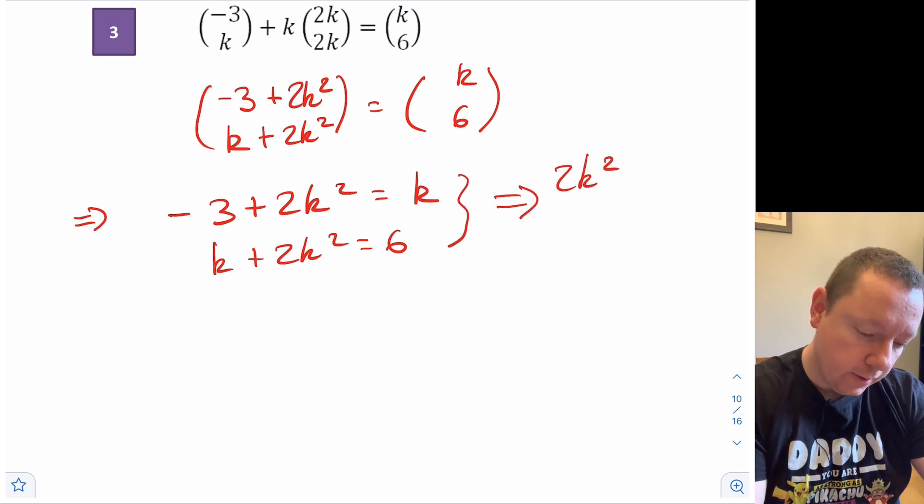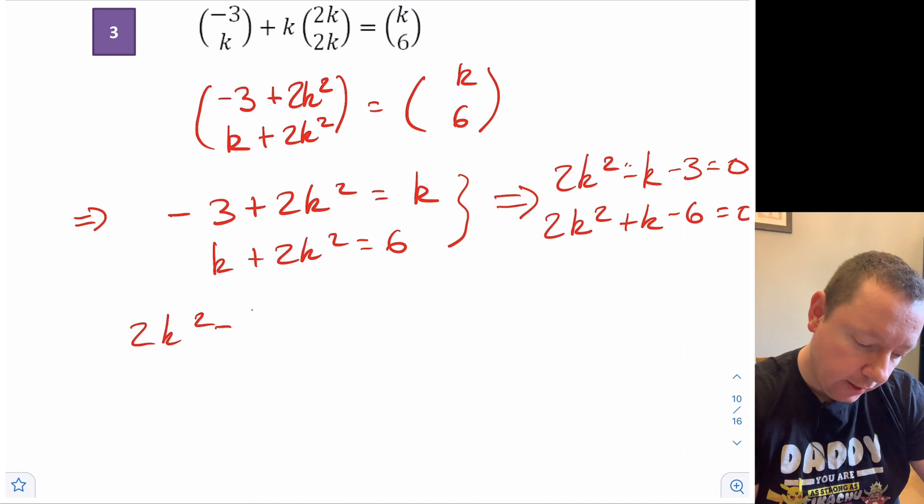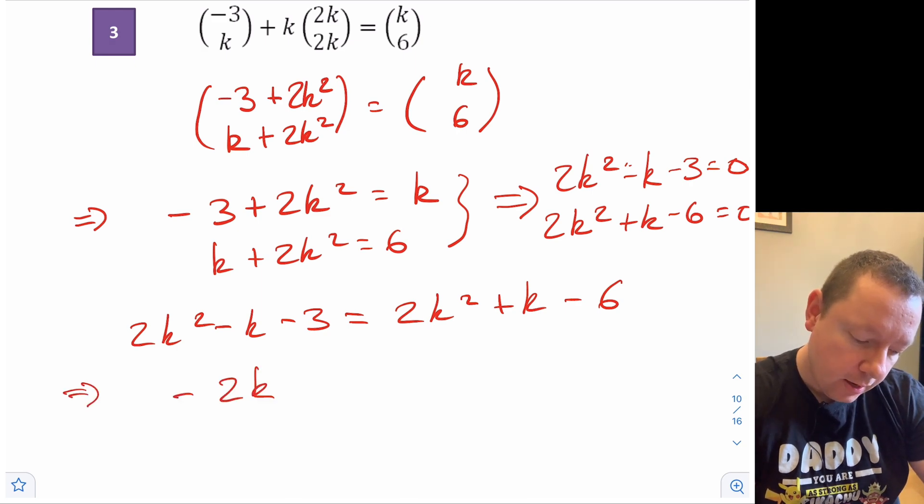That gives us -3 plus 2k² equals k, and k plus 2k² equals 6. So that implies we've got 2k² - k - 3 = 0, and we've got 2k² + k - 6 = 0. So equating both of the equations together simultaneously, 2k² - k - 3 = 2k² + k - 6. That implies that we've got -2k = -3, so k equals 3/2.